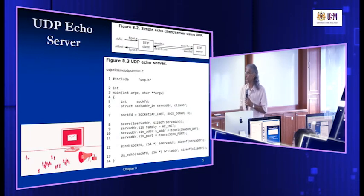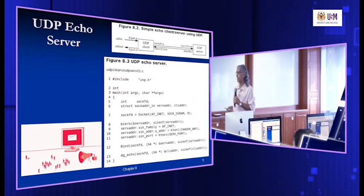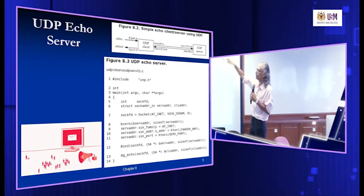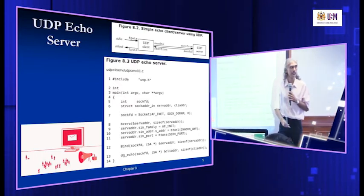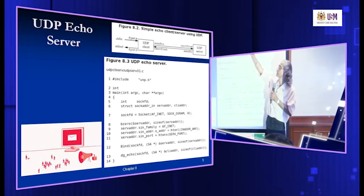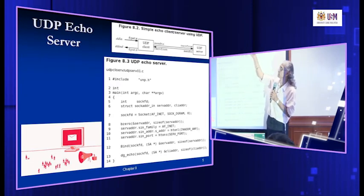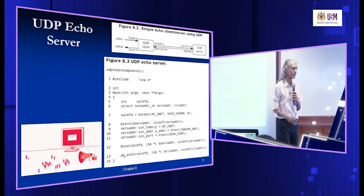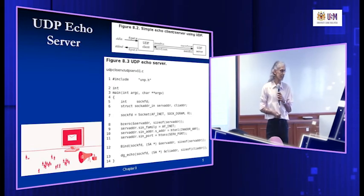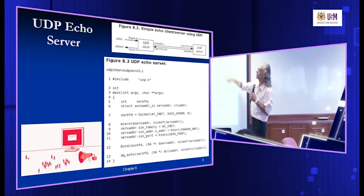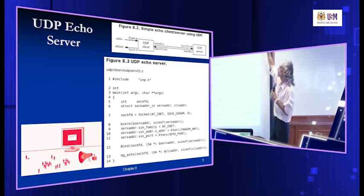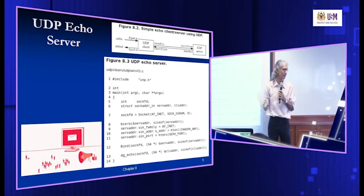Let's look at the same echo server example, but now using UDP sockets. The client still gets data from the user on the command line, takes the line, and sends it to the server. The server waits for data from the client. Once it gets the data, it replies back with the same data. The client waits continuously for the response, then displays it to standard output. The main difference is that here we use sendto on the client side and recvfrom on the server side — we don't use read and write anymore.